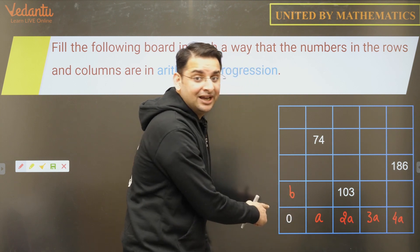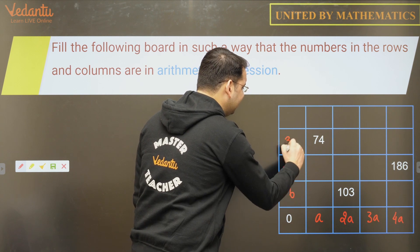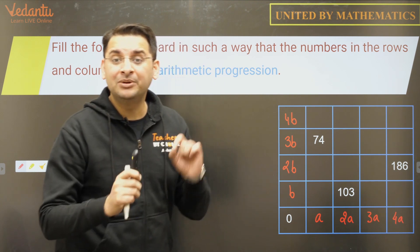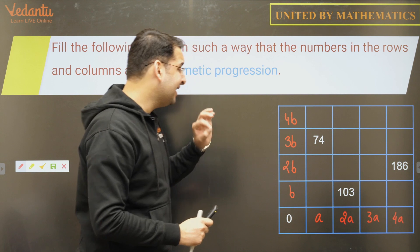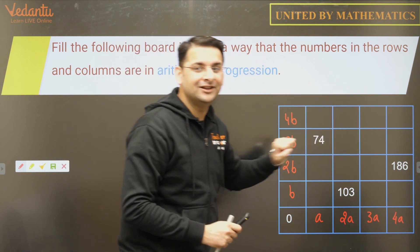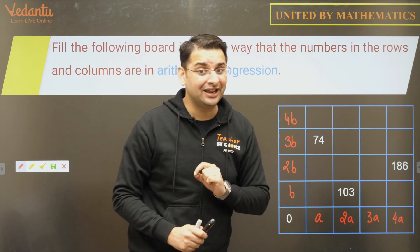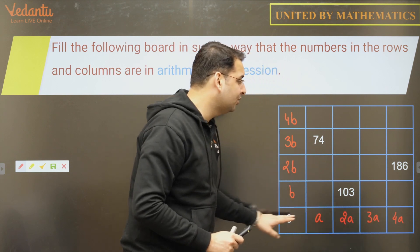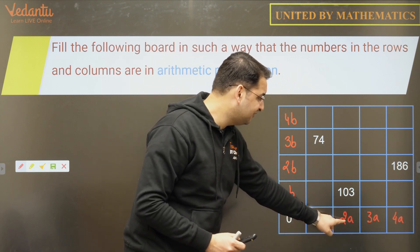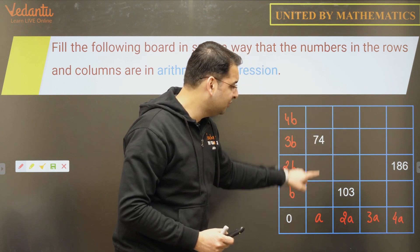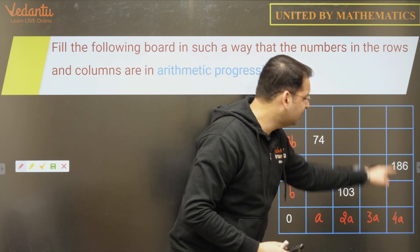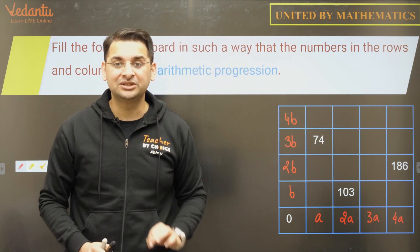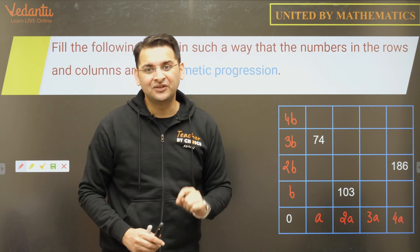Now let us assume this number as 'b', with common difference b again. So it will be 2b, 3b, and 4b. If I'm somehow able to find the values of a and b, all the boxes will be filled — because this row and column with 'a' will be filled, the column with 103 is known, 74 is known, and from all of those we can fill every row and column.